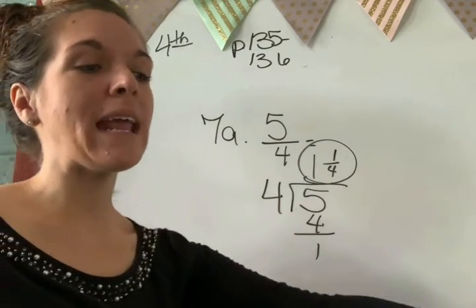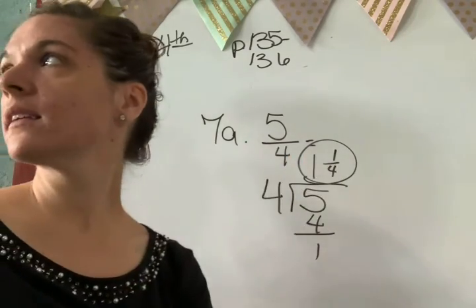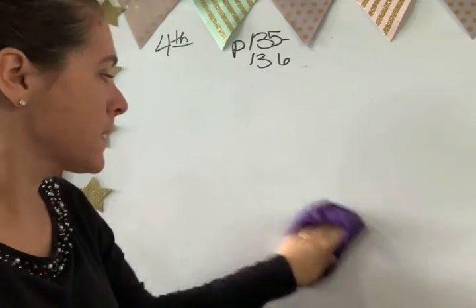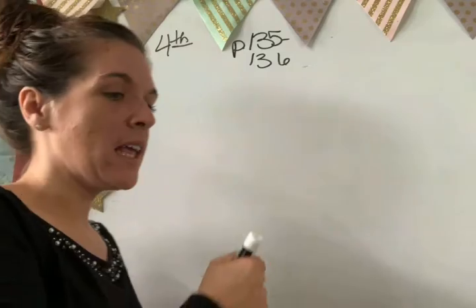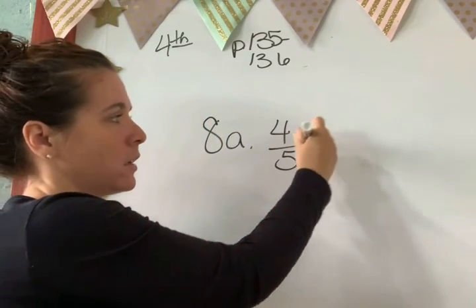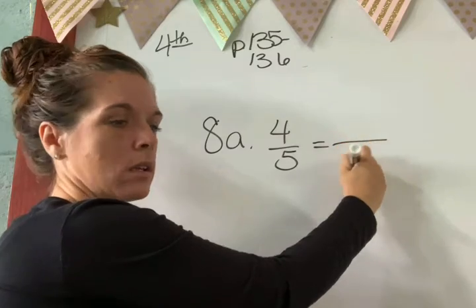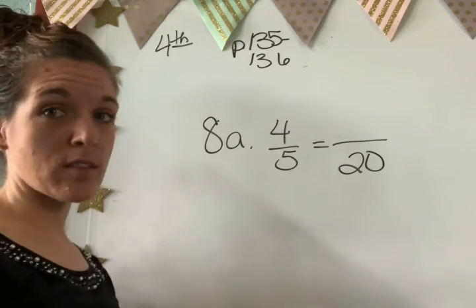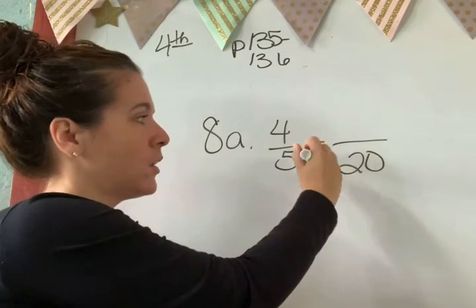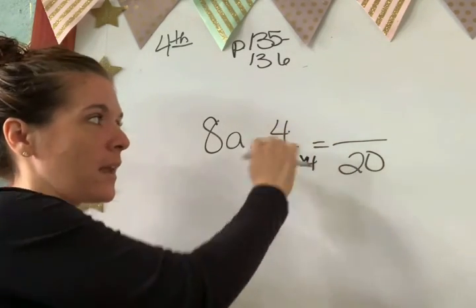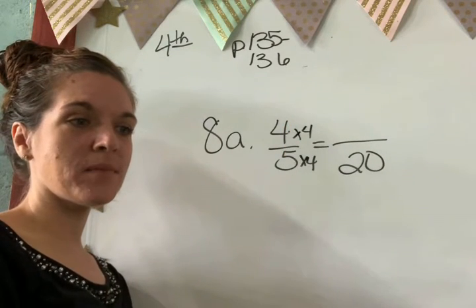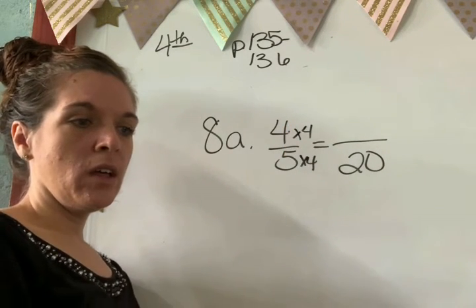Okay. Look at number 8. Number 8. Almost there, Junior. Almost there. Don't lose patience with me. Okay. Number 8. This is what we just learned. Okay. This is what we just learned. So I'm going to teach it to you again. 5 times what equals 20? 4. So you have to multiply what up here? 4.